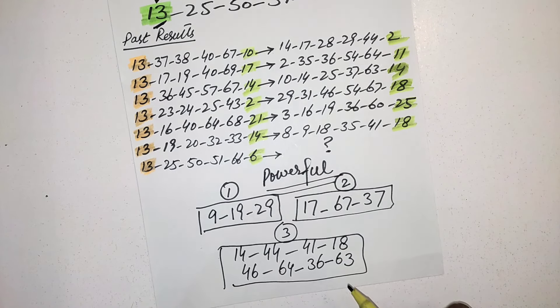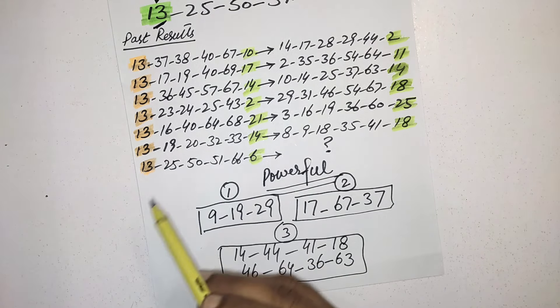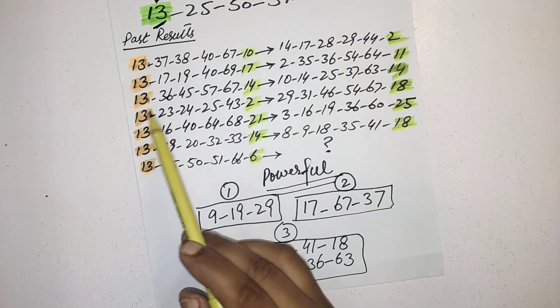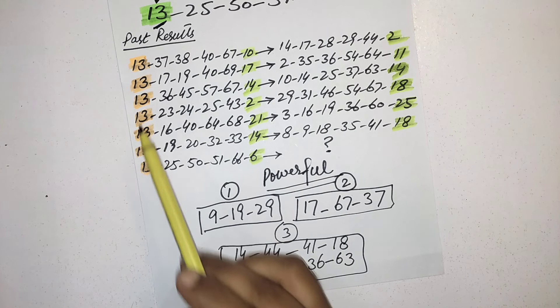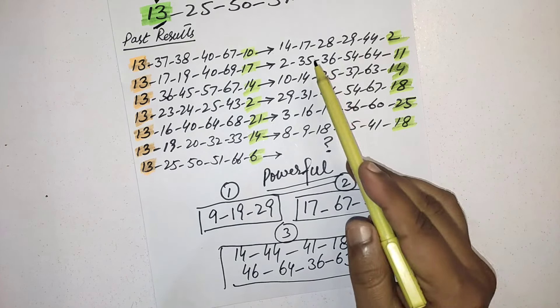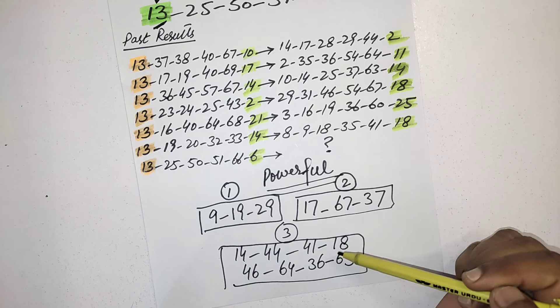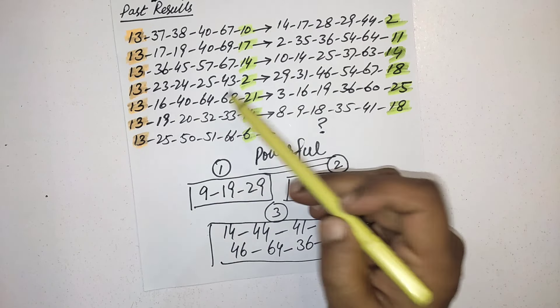Friends, these are total 15 numbers out of 70. Every draw when the 13 number came as a first number, they picked the most numbers in the next result from these 15 numbers. These are the previous latest results. You can also check from past history.